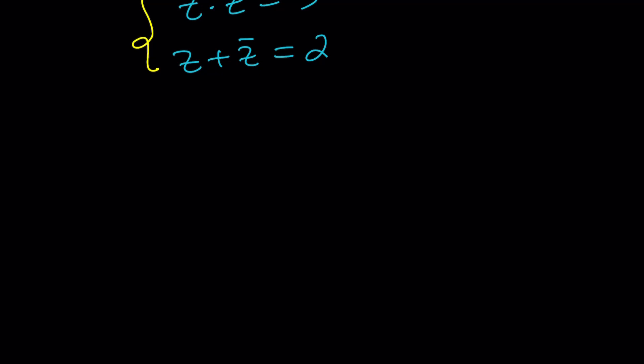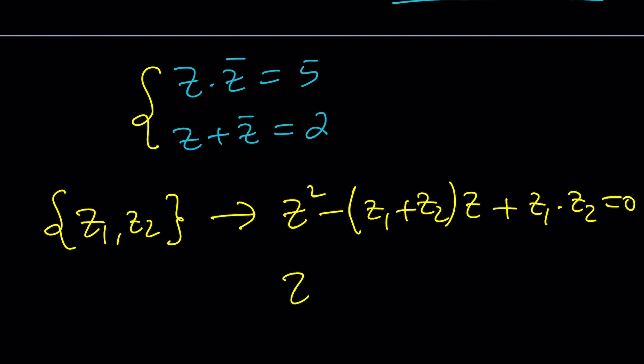If you have an equation whose solutions are Z sub one and Z sub two, if this is the solution set, then you can write the equation as follows: Z squared minus Z1 plus Z2 times Z plus Z1 times Z2. Why? Because the sum of the roots and the product of the roots. Take a look at it: negative B over A and C over A. Make sense? So all we have to do is plug these numbers in and we get Z squared minus 2Z plus 5 equals 0. Exact same equation.